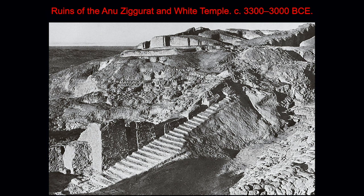Mud bricks disintegrate over time, basically leaving lumpy piles of earth — that's why the ziggurats look as they do today. In Uruk, a Sumerian city-state, there were two large temple complexes: one dedicated to Inanna, and one dedicated to the sky god Anu, called the White Temple. They were built with receding tiers upon a rectangular, oval, or square platform — a pyramidal structure with a flat top, often faced with glazed brick in a mosaic pattern. Sometimes kings had their names engraved on these glazed bricks. The tiers ranged from two to seven, with probable shrines at the top, though there's no archaeological evidence for this.